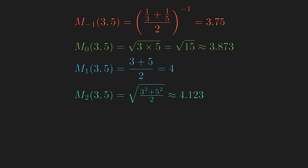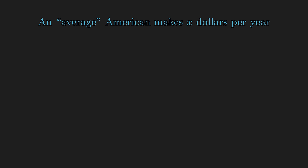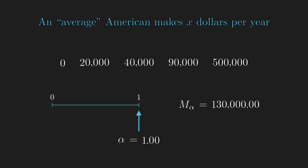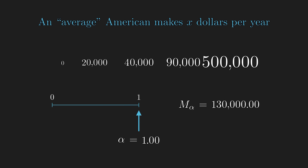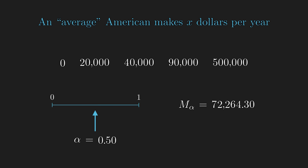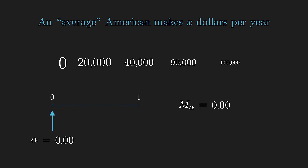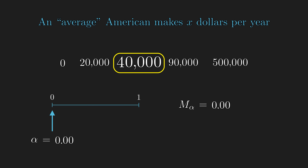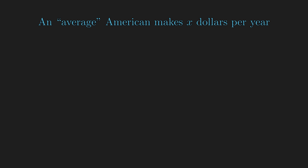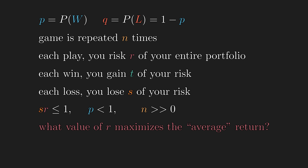Two more commonly used averages: median and mode. For average American income, billionaires skew the arithmetic mean and zero-income individuals make the geometric mean zero, so we use the median — the middle number — which better represents a typical person. When we say 'an average American owns a smartphone,' we mean most Americans, so the mode — the most frequent value — is the appropriate representative. Now with a solid notion of averages, we are ready to take the first step.